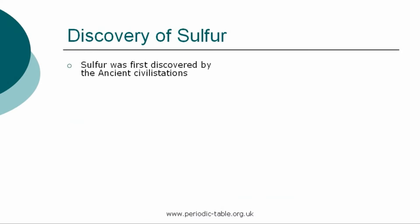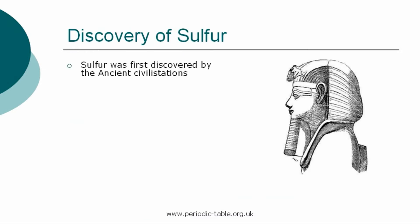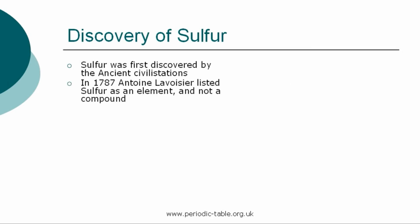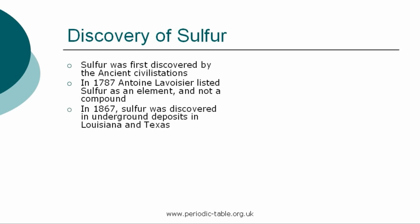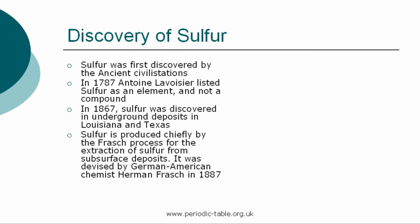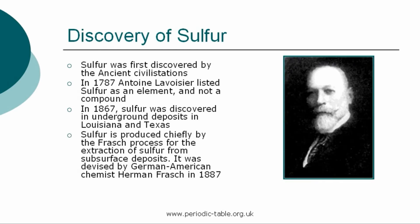Sulfur was first discovered by the ancient civilizations. It was often used in their religious rites as the odor of burning sulfur was believed to ward off evil spirits. The ancient Romans used sulfur in pyrotechnic displays in the Roman Colosseum and also in the production of incendiary weapons, including Greek fire. In 1787, Antoine Lavoisier listed sulfur as an element and not a compound. In 1867, sulfur was discovered in underground deposits in Louisiana and Texas. Sulfur is produced chiefly by the Frasch process for the extraction of sulfur from subsurface deposits, devised by German-American chemist Hermann Frasch in 1887.